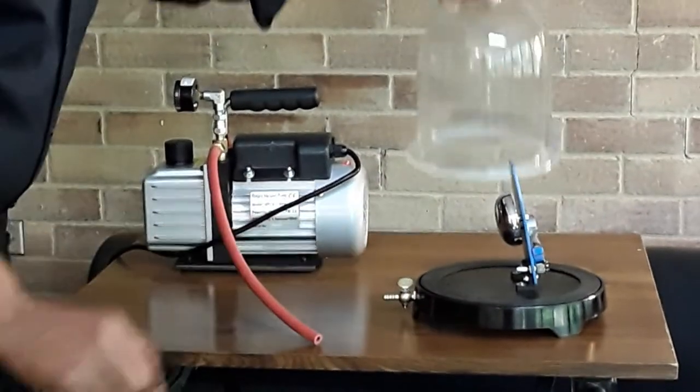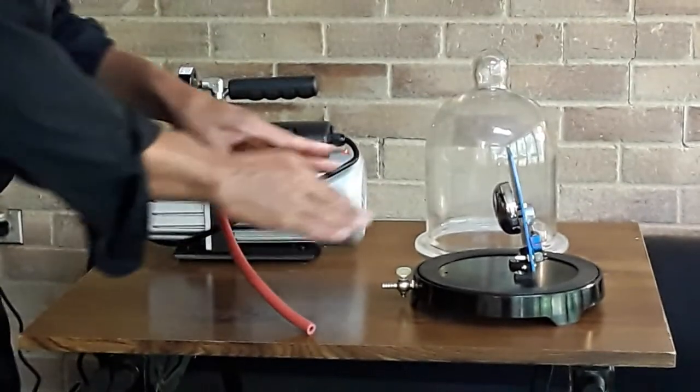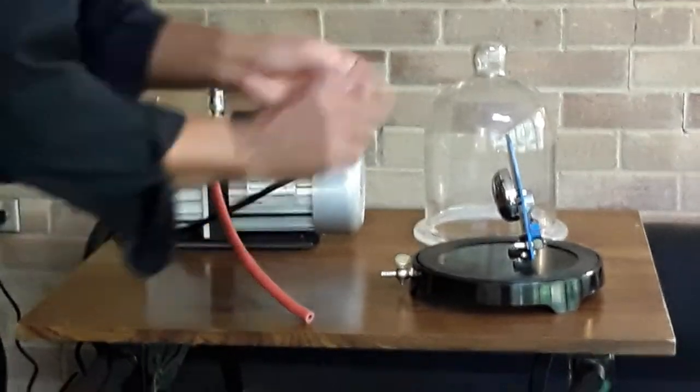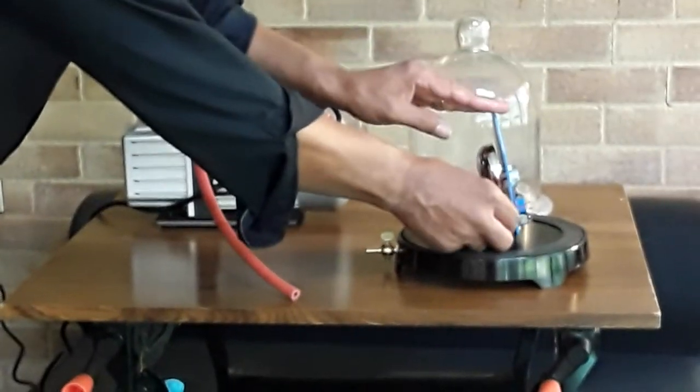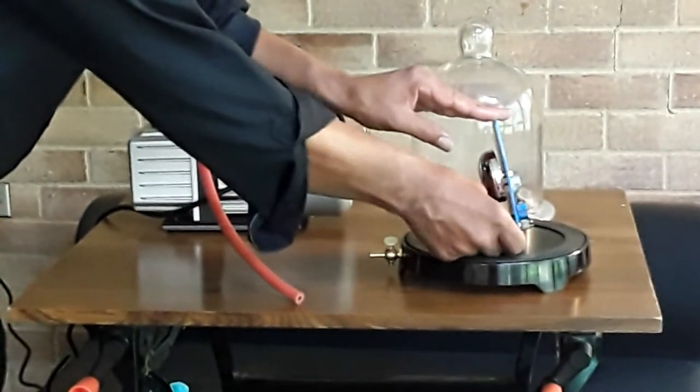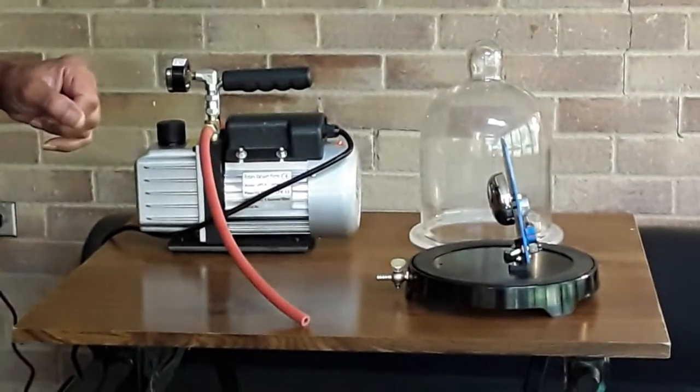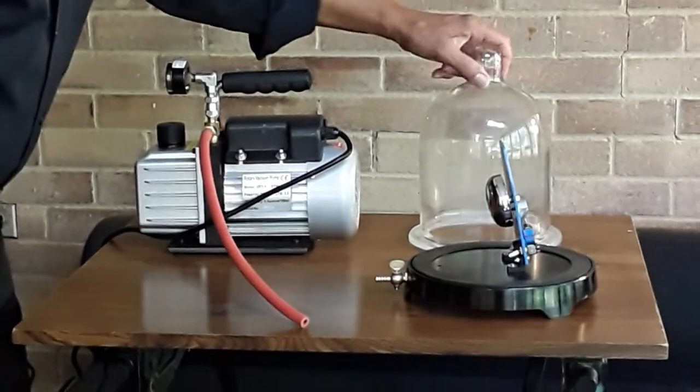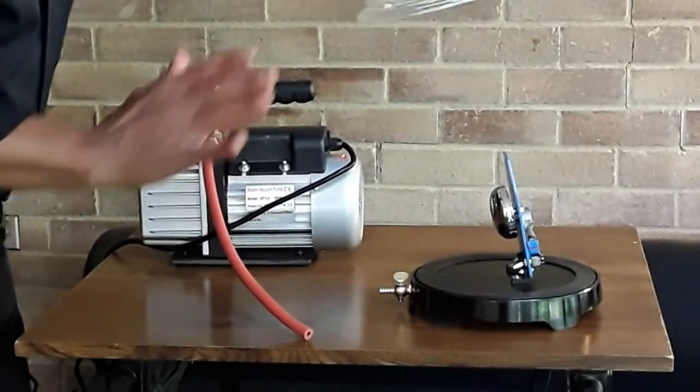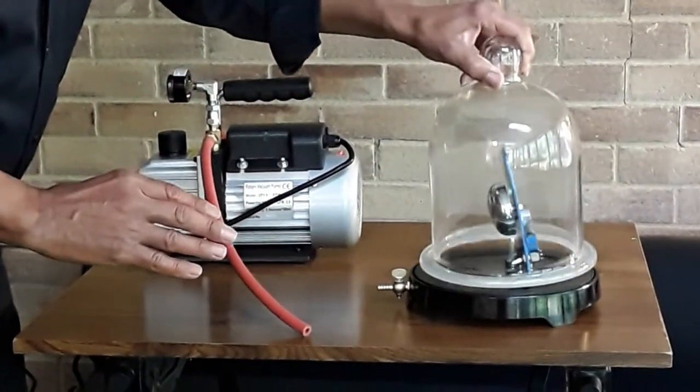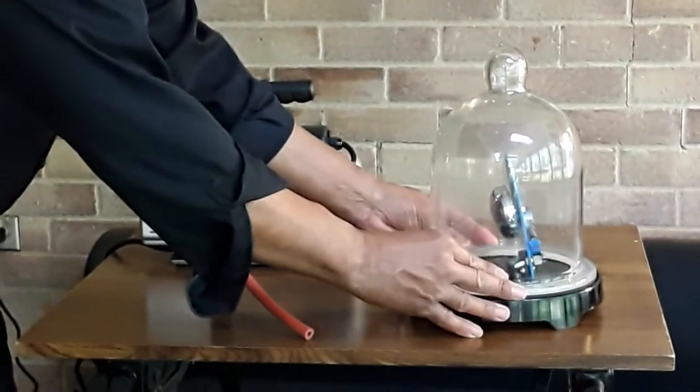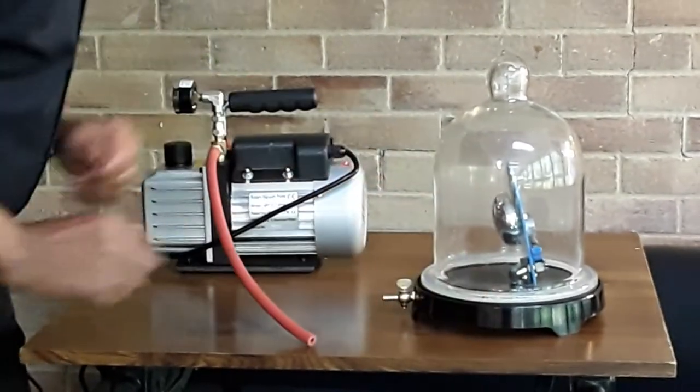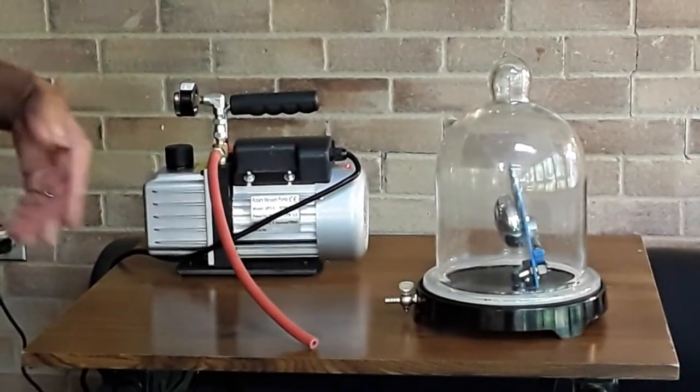So what we're going to do is first of all, we're going to ring the bell and get the sound of the bell ringing. Now we're going to put on the bell jar, and even though the sound is muffled, you still can hear the sound of the bell ringing.